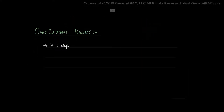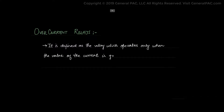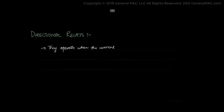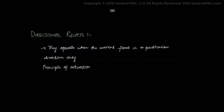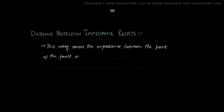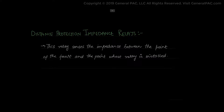Overcurrent relays are defined as a relay which operates only when the value of current is greater than the relay setting time. Directional relays operate when the current flows in a particular direction only; principles of actuation are actually employed. Distance protection relays are relays that sense the impedance between the point of the fault and the point where the relay is installed — and by sense, we mean actually calculate the impedance using current and voltage quantities.